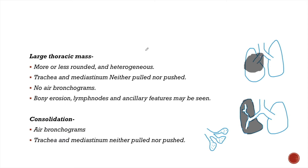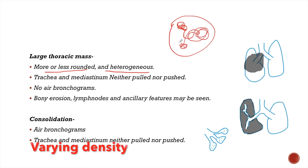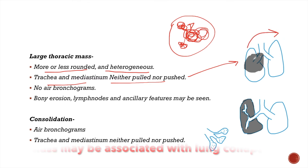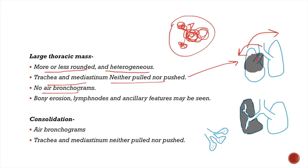The other cause for unilateral opaque hemithorax is large thoracic mass. Masses are more or less rounded in shape and have heterogeneous appearance, meaning they have varying density in different regions — usually more dense towards the center and less dense towards the periphery. Trachea and mediastinum are neither pulled nor pushed by the lesion; however, a large mass may cause pushing of the trachea and mediastinum towards the opposite side. When the mass is associated with collapse of the lung, the trachea and mediastinum may be pulled towards the same side. There will be no air bronchograms in the mass because the bronchi will be blocked by the mass.